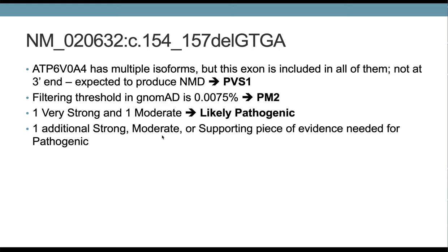Looking at the first variant, the frameshift deletion: the gene has multiple isoforms, but this exon is included in all of them and is not at the 3' end, so we expect nonsense-mediated decay. This would be a null mutation and can be classified using the PVS1 rule. This variant has been seen in gnomAD, but at a very low frequency of 0.0075%, which we feel is low enough in this recessive disorder to qualify for PM2. So far we have one very strong and one moderate criterion, giving us a likely pathogenic interpretation. To reach definitively pathogenic, we would need at least one more strong, moderate, or supporting piece of evidence.